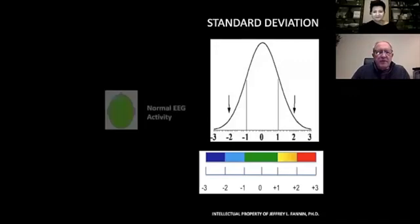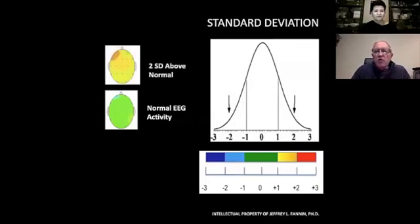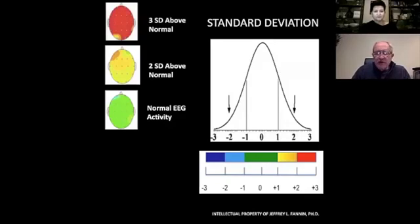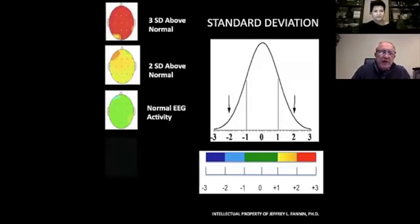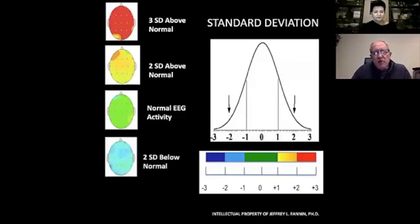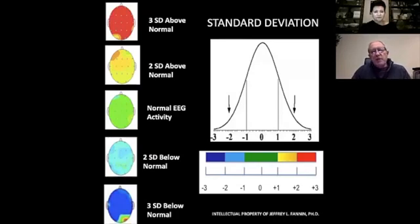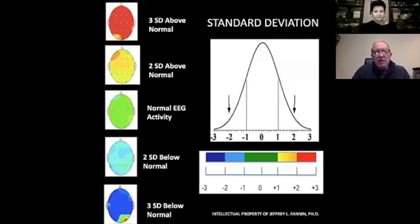When we see green in the brain maps, we're taking the squiggly lines and converting them to what we know as a quantitative EEG, a QEEG. The green means it's normal EEG activity. If it's yellow or orange, we know that it's two standard deviations above normal. If it's red, we know that it's three standard deviations above normal. On the other side of the scale, we have two standard deviations below normal which is light blue, and dark blue is three standard deviations below normal. A lot of people will equate that with good and bad, but that's not necessarily the case - it really depends on the frequencies.